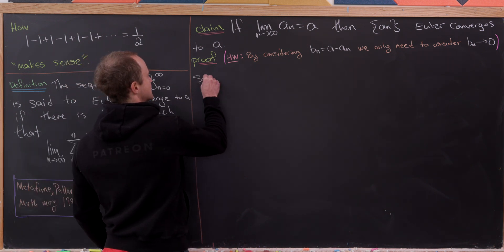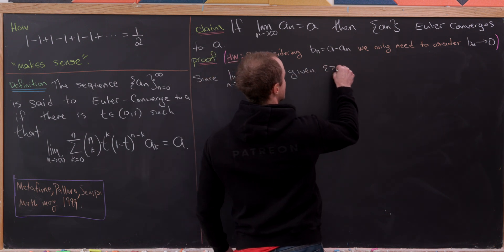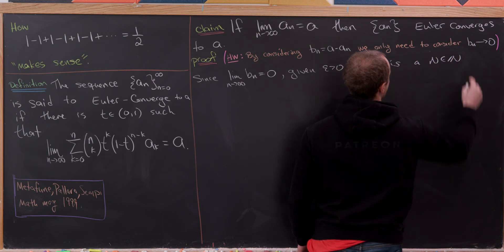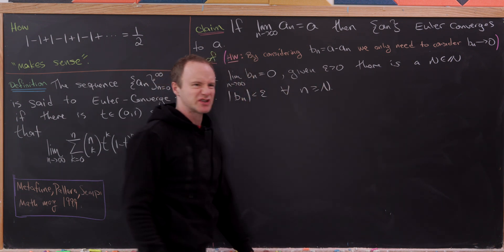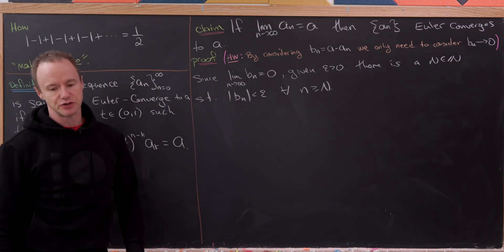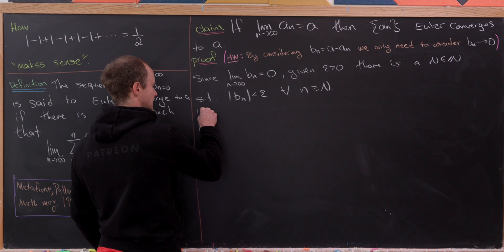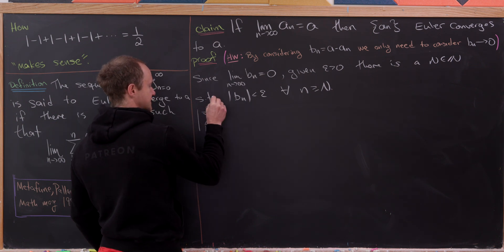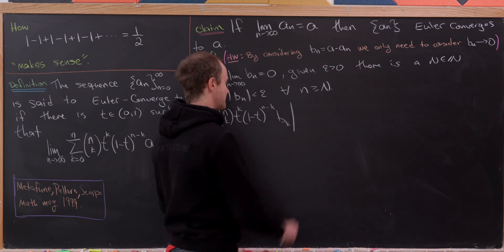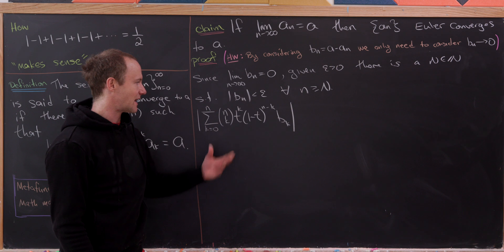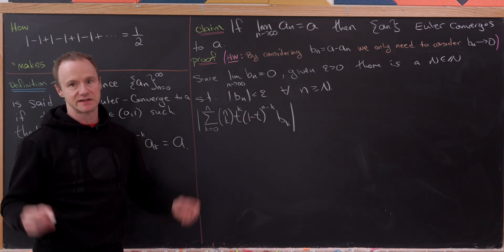Since we know the limit as n goes to infinity of b sub n equals zero, given epsilon greater than zero there is a natural number capital N such that the absolute value of b sub n is less than epsilon for all little n greater than or equal to capital N. That's just the precise definition of the limit. Now let's consider the absolute value of the argument of this limit — that is, the absolute value of the sum as k goes from zero to n of our binomial coefficient, t to the k, (1 minus t) to the (n minus k), times b sub k. We'd like to show that this object is as small as possible, since we need this to Euler converge to zero.